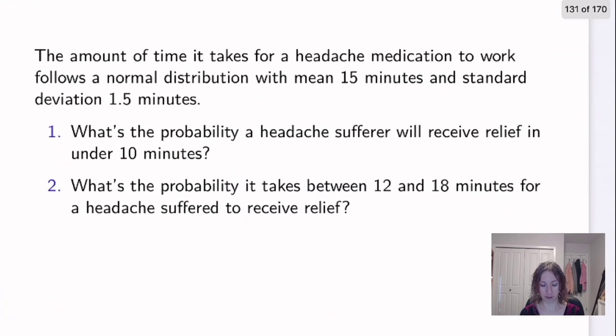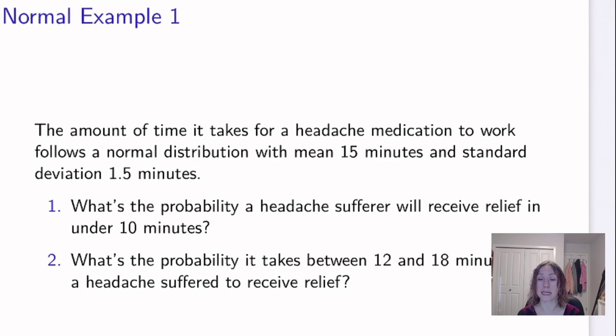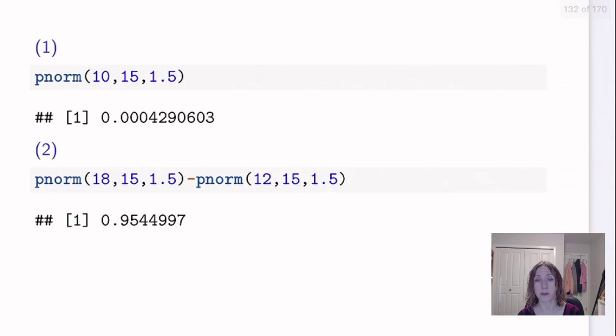And then we can see that the other part of the question was the probability it takes between 12 and 18 minutes. So we know the probability being between two values is table entry of big one minus table entry of the smaller one. pnorm is the same thing. So pnorm of the bigger number minus pnorm of the smaller number. I'm just going to do it using the actual mu sigma. So I could solve that problem going pnorm of the bigger X, 18, mu 15, standard deviation 1.5, minus my pnorm of the smaller X, 12, with mu 15 and standard deviation 1.5. And that is going to solve my probability for me.